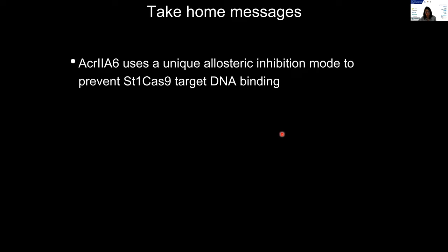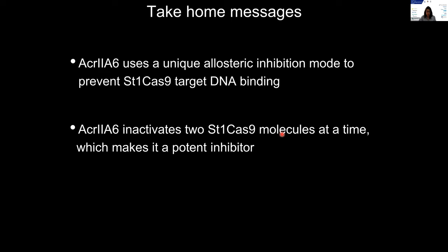As take-home messages: ACA2A6 uses a unique allosteric inhibition mode to prevent Cas9 target DNA binding. ACA2A6 binds to an allosteric site on Cas9, affects Cas9 structural dynamics associated with DNA binding, which reduces Cas9 DNA binding affinity and thereby prevents target binding within cells. Additionally, ACA2A6 can bind to and inactivate two Cas9 molecules at a time, making it a potent inhibitor that could block all Cas9 interference activity even when present at low concentration.